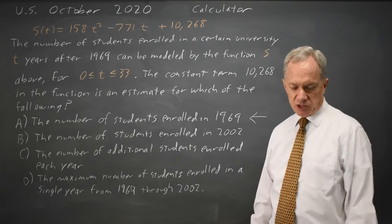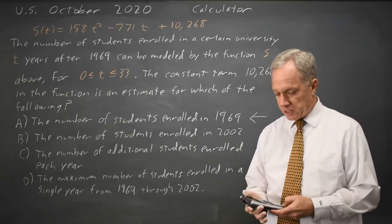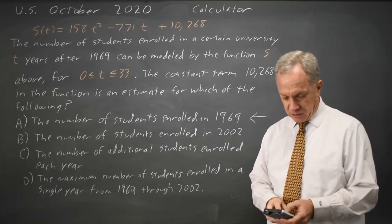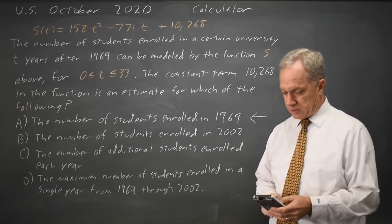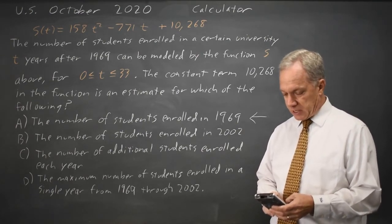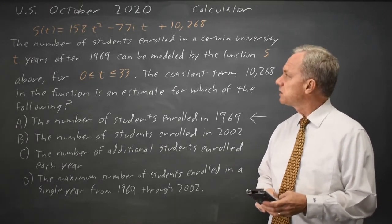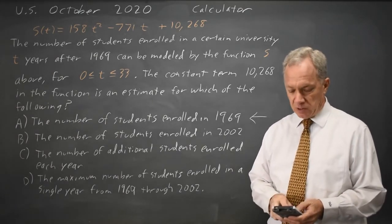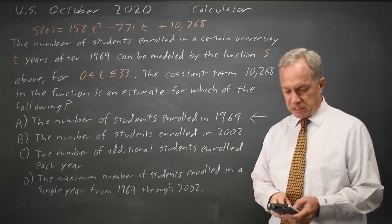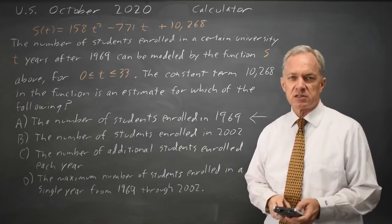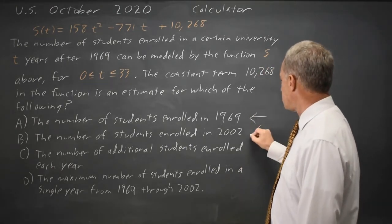Choice B, the number of students in 2002. 2002 is 33 years later. If I go to my calculator and put 158x squared minus 771x plus 10,268 into y equals, I can look at the table and scroll down to x equals 33. And I find there's more than 150,000 students in that year. So 10,268 is not a good estimate.